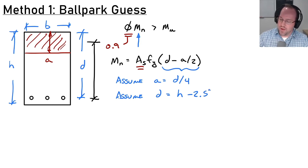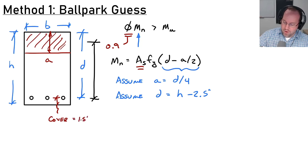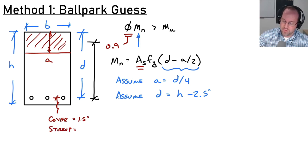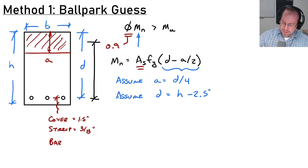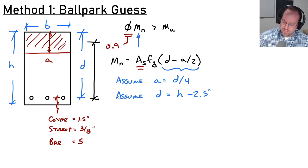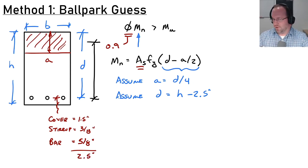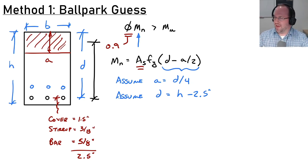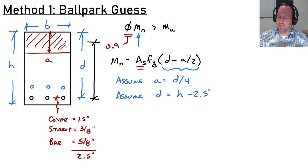Where does that 2.5 inches come from? Looking at the bottom of my section, I need cover — typically about 1.5 inches for most reinforced concrete beams. I'll also include a stirrup, typically a #3 stirrup with a diameter of 3/8 inch. Then I include my bar radius — using a #10 bar, for example, that's a radius of 5/8 inch. Adding those together gives 2.5 inches. If you expect a second layer of steel, you'd add one inch to get about 3.5 inches instead.